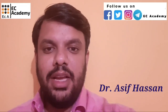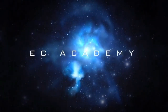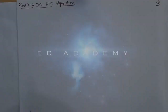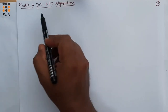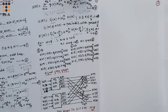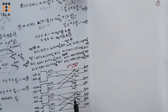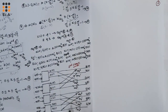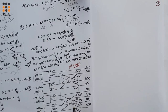Hello friends, welcome to ESA Academy. In this lecture, let us continue our discussion of radix-2 DIT FFT algorithm. In the previous video, we completed the first stage in decimation-in-time FFT for N equal to 8, and also we completed the second stage in decimation-in-time FFT for N equal to 8.